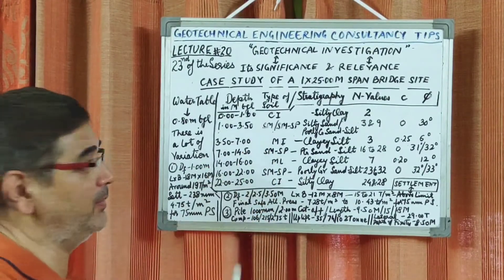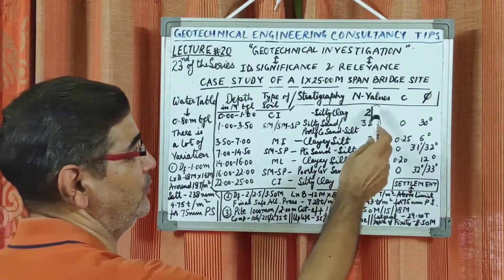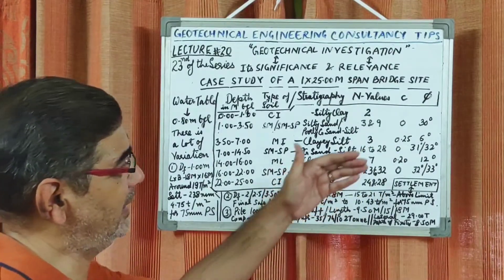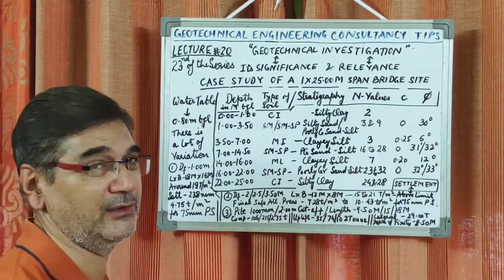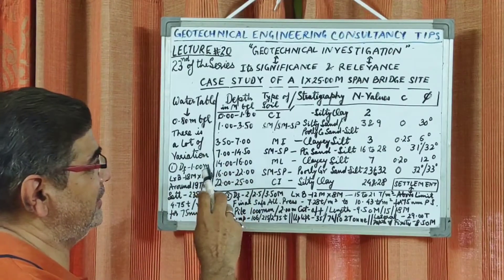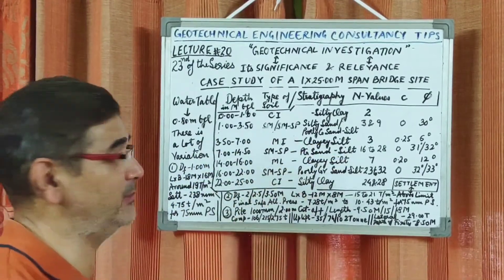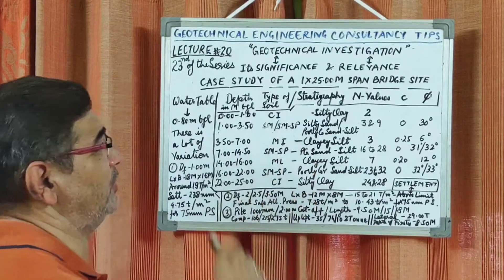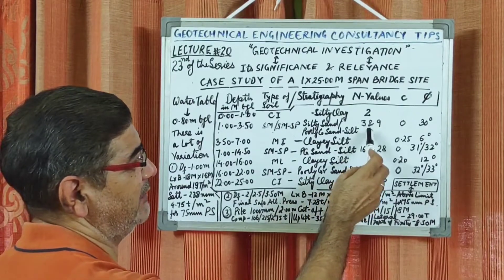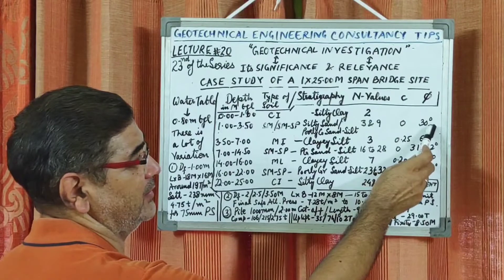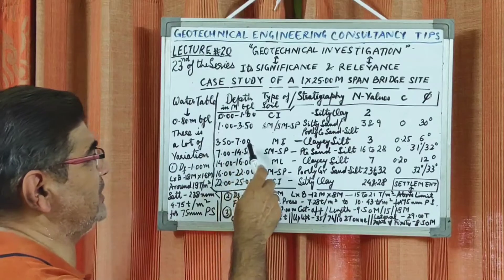The top 1 meter of the site comprised silty clay of low-medium plasticity and compressibility, CI group, with an N value (standard penetration test value) of 2. For the next layer, from approximately 1 meter to 3.5 meter, we did not test cohesion, but the angle of internal friction was 30 degrees with cohesion being 0 for this non-cohesive layer.